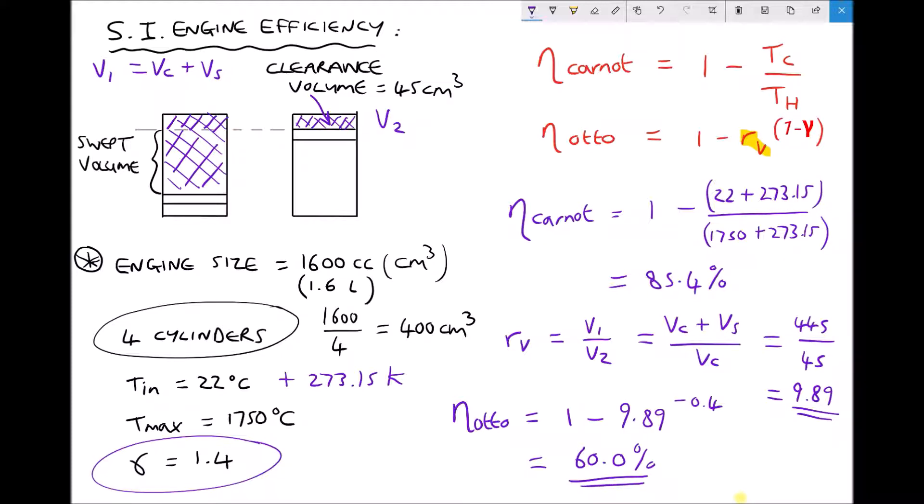What's the relevance of this information? We said the Carnot efficiency assumes isothermal processes, but in reality that's not the case in a spark ignition engine. We then calculated the ideal Otto efficiency which also makes assumptions: adiabatic compression and expansion, and heating of the air-fuel mixture caused by the spark plug happens at constant volume.